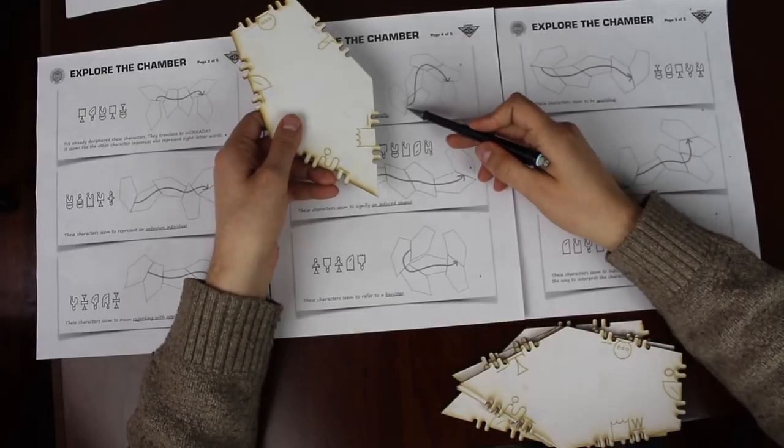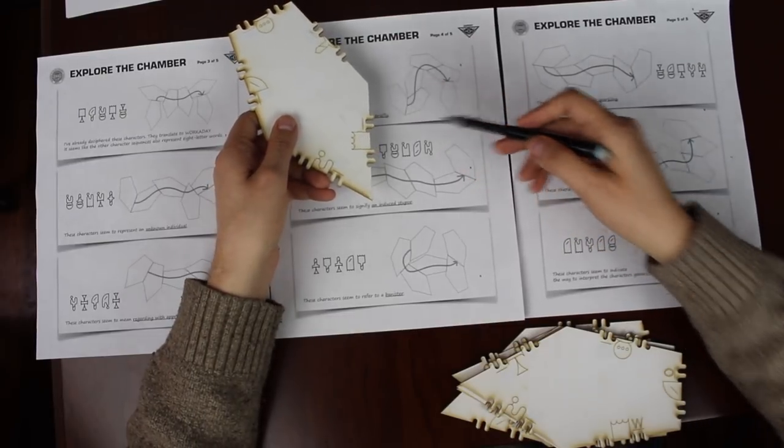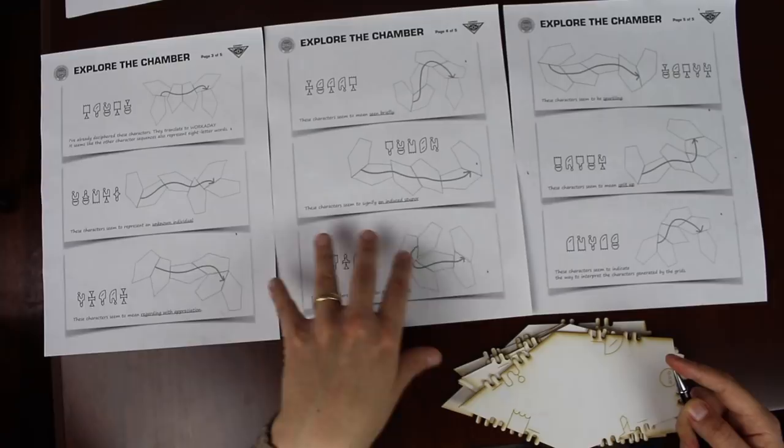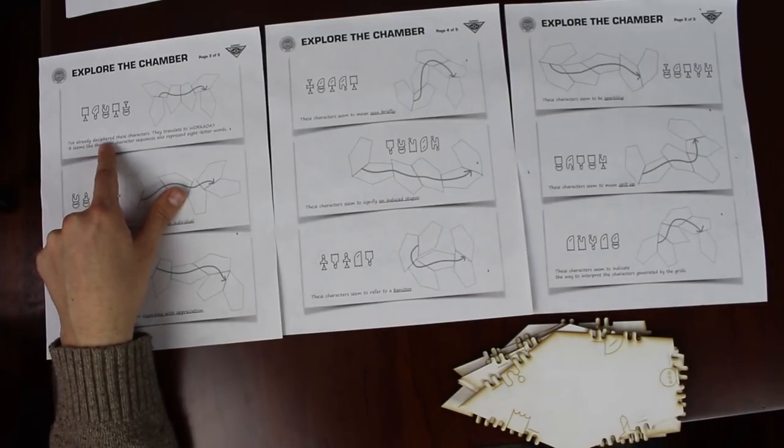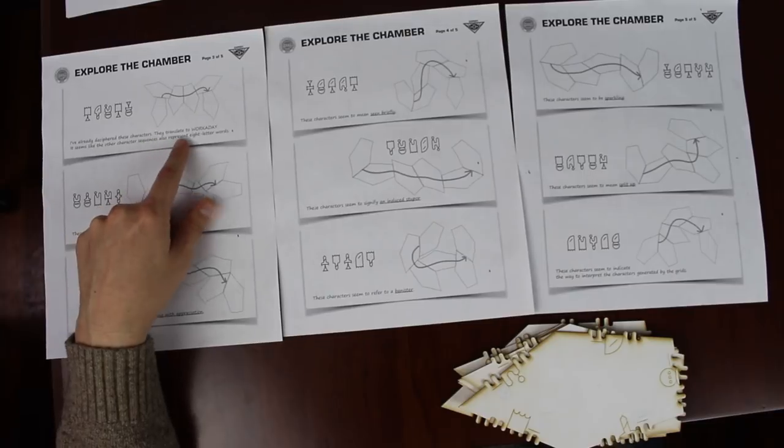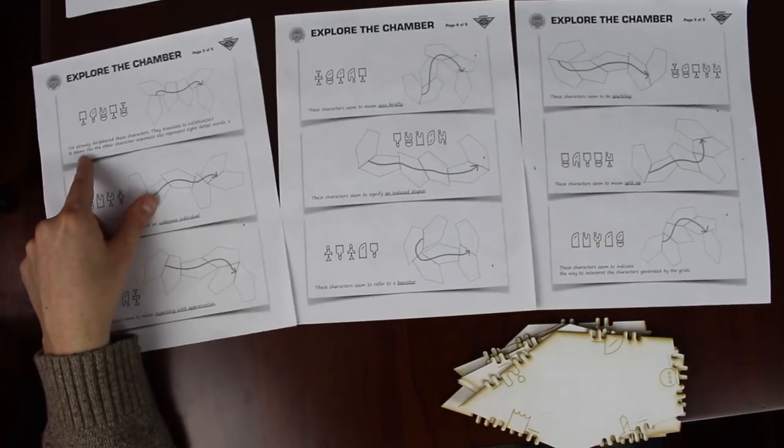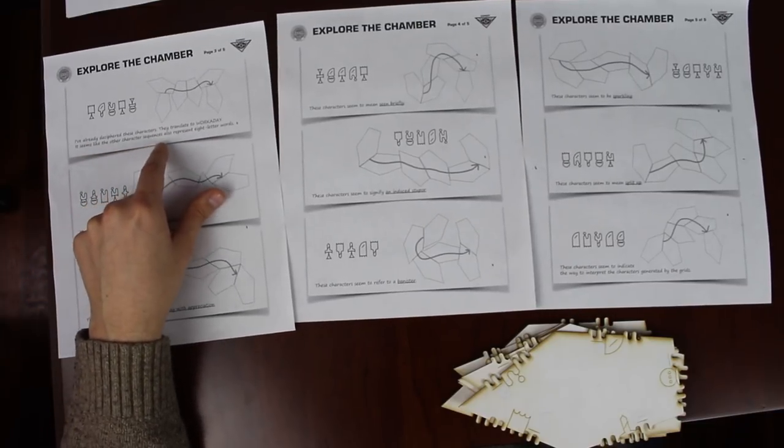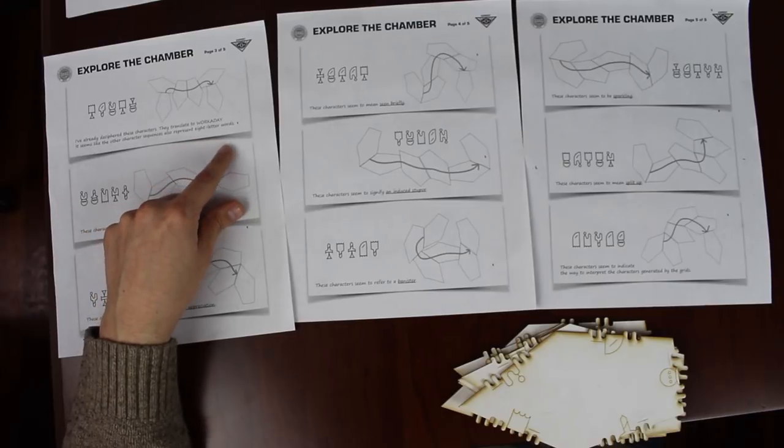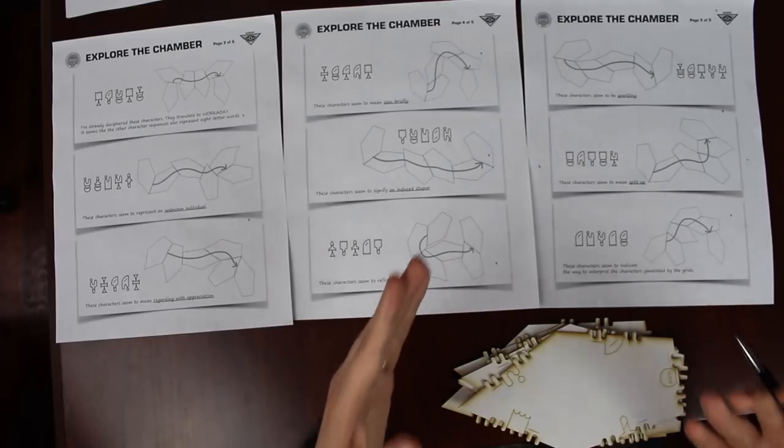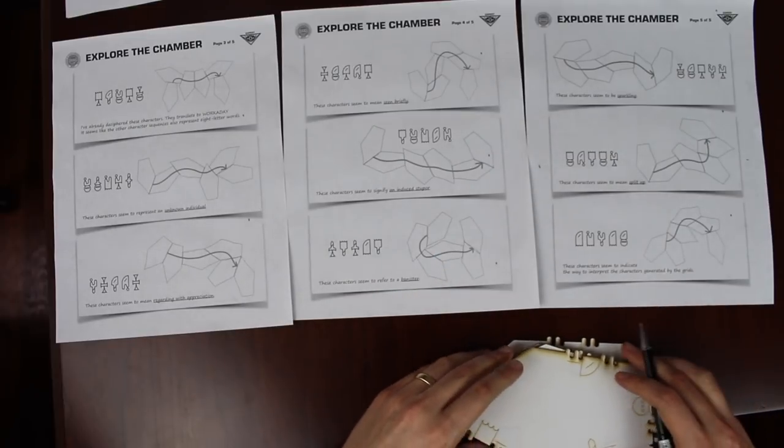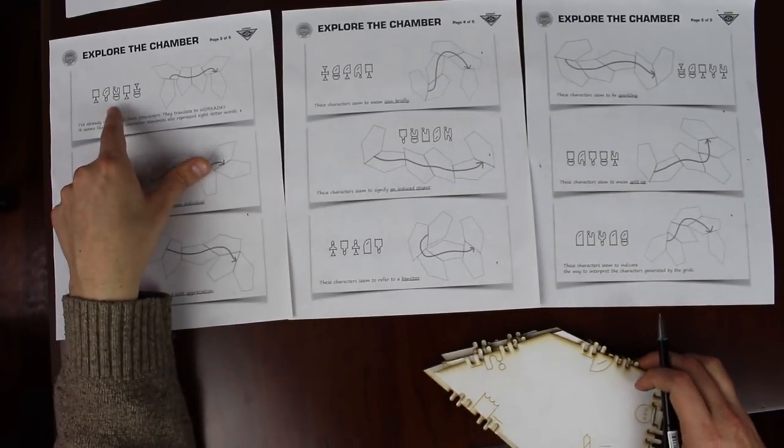Each one of them has a sentence followed by some sort of description. And then we have this sentence here. I've already deciphered these characters. They translate to workaday. It seems like the other character sequences also represent eight-letter words. There's an underlined part of each sentence. That's a crossword clue for an eight-letter word. Now what does this mean that this translates to workaday?